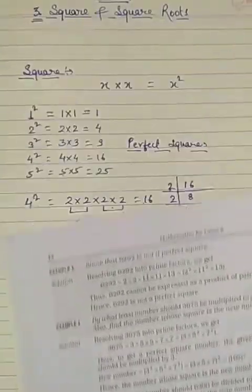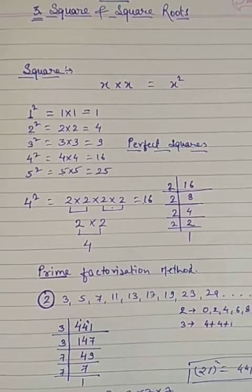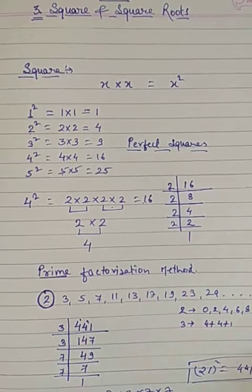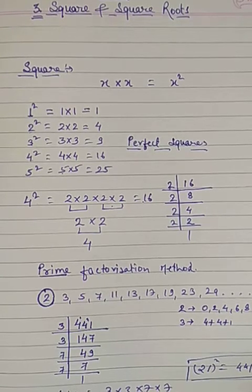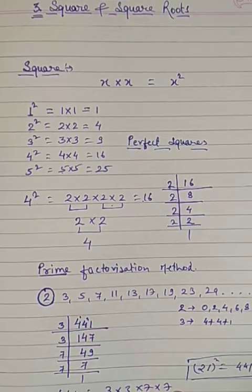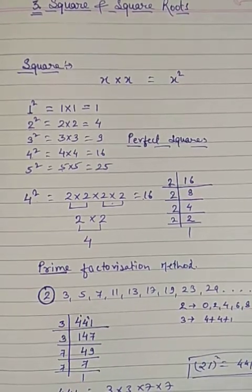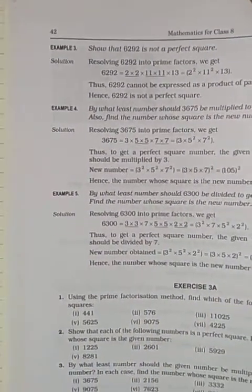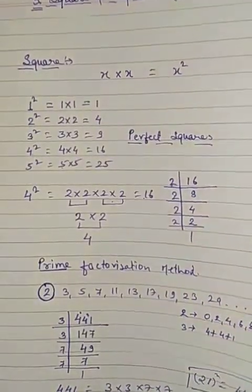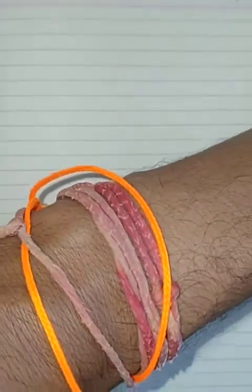We can use any method — here we will use the prime factorization method to find which of the following numbers is a perfect square.